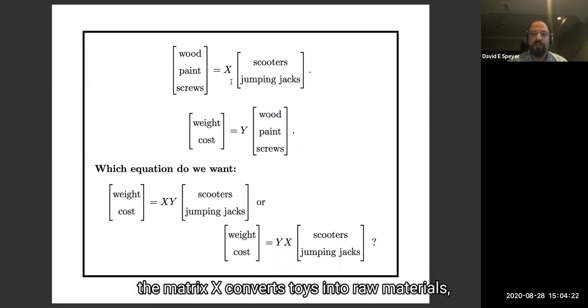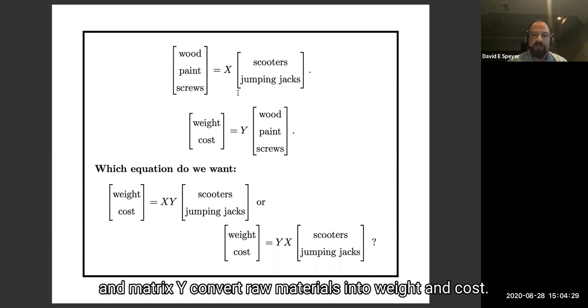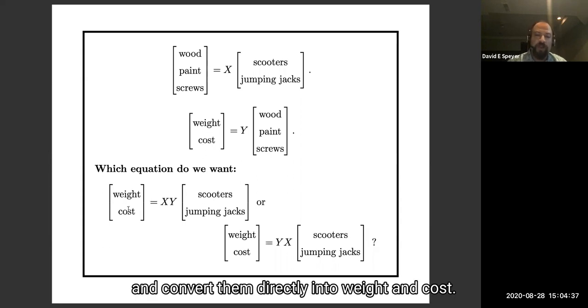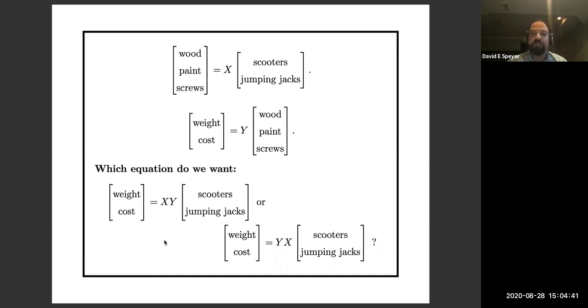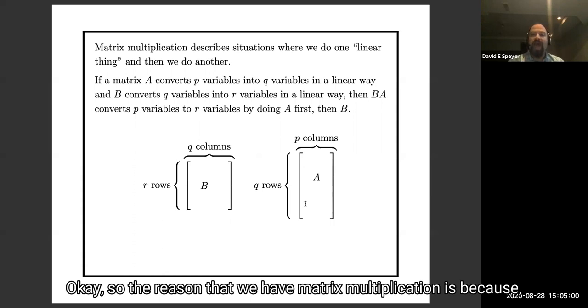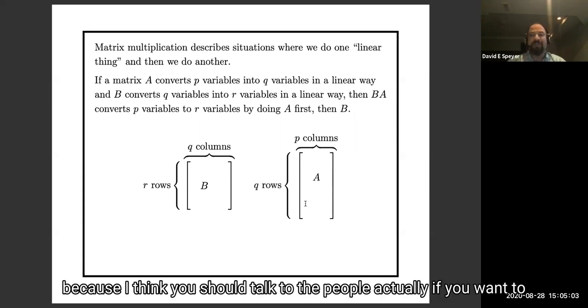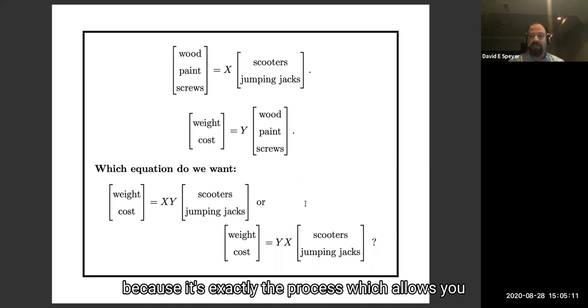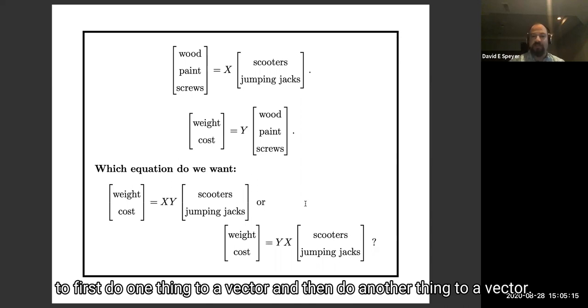Okay, so we've got two matrices. The matrix X converts toys into raw materials, and matrix Y converts raw materials into weight and cost. If we want to take our toys and convert them directly into weight and cost, I claim we should multiply the matrices. And I'm going to ask you, which way should we do it? Should we multiply X times Y or Y times X? Pause the video, write down what you think, go on. Okay, so the reason that we have matrix multiplication is because, and again, I'm not telling you the answer because I think you should talk to people in section if you want to, but matrix multiplication is built the way it is because it's exactly the process which allows you to first do one thing to a vector and then do another thing to a vector.